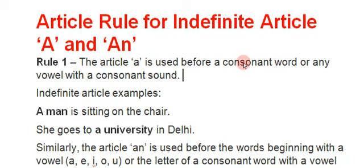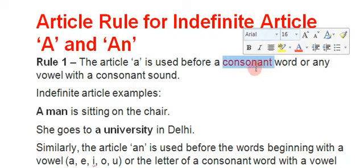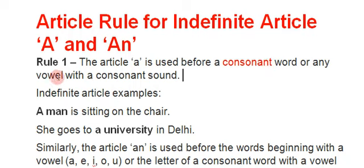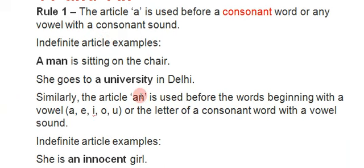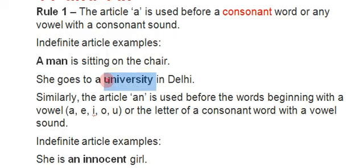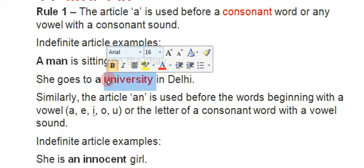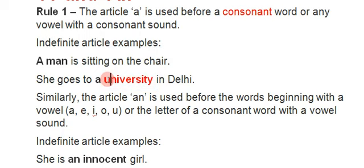Rule one: the article 'a' is used before a consonant word. Remember — any word that starts with a consonant or has a consonant sound, we use 'a' with it. For example, 'a man' — man starts with 'm'. Also, 'she goes to a university' — 'university' starts with 'u' but its sound is 'yu', which is a consonant sound, so we use 'a university'.